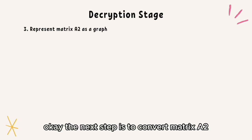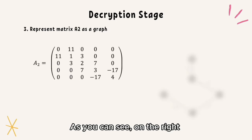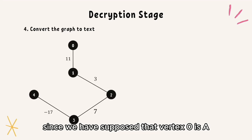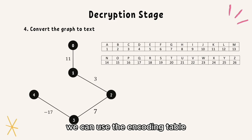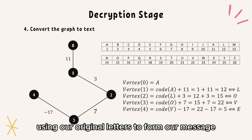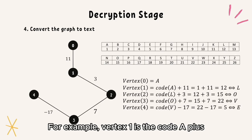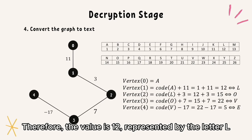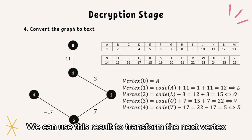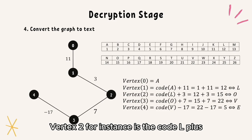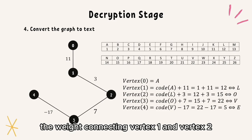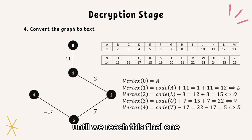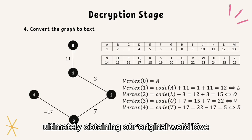The next step is to convert matrix A2 into a graph using the same rules as before. As you can see, on the right is the graph representation of matrix A2. Since we supposed that vertex 0 is A, we can use the encoding table to transform each vertex back into letters to form our message. For example, vertex 1 is the code of A plus the weight connecting vertex 0 and vertex 1, which is 11. Therefore, the value is 12, represented by the letter L. Vertex 2 is the value of L plus the weight connecting vertex 1 and vertex 2, which is 3. Therefore, the value is 15, represented by the letter O. We repeat this process for each vertex, ultimately obtaining our original word 'love'.